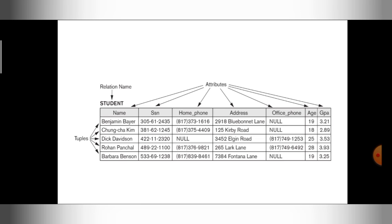For example, Benjamin Bayer is the first student and Barbara Benson is the last student — but I can change the position of Barbara Benson to first and Benjamin Bayer to last. No ordering is important here — any record can be in any position. Dick Davidson or Rohan Panchal can also be in the first position. There is no ordering between the tuples.